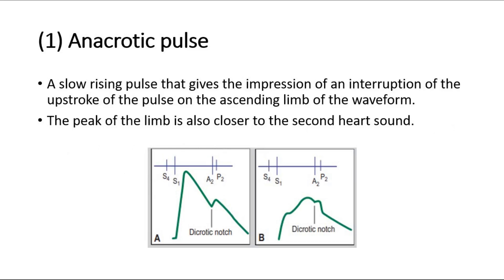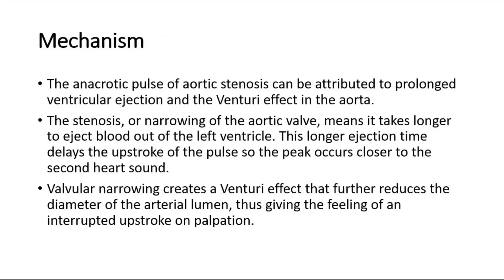The first type of arterial pulse is the anacrotic pulse. It is a slow-rising pulse that gives the impression of an interruption of the upstroke of the pulse, on the ascending limb of the waveform. The peak of the limb is also closer to the second heart sound. Picture A shows a normal arterial pulse, whereas Picture B shows an anacrotic pulse. This pulse is often associated with aortic stenosis.